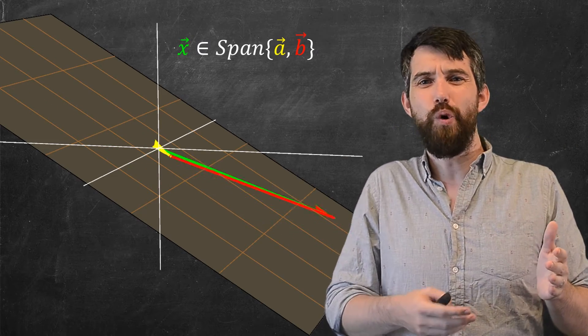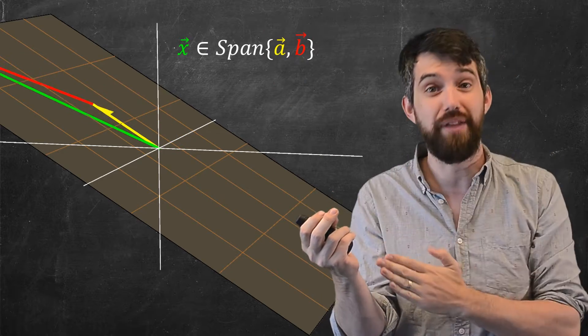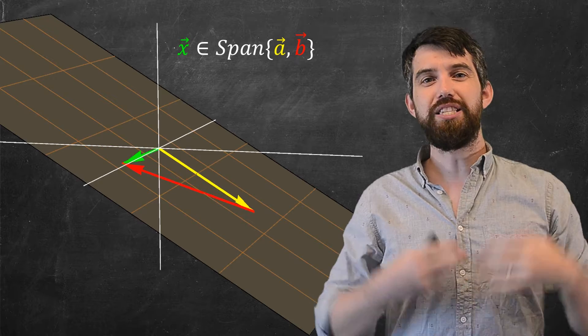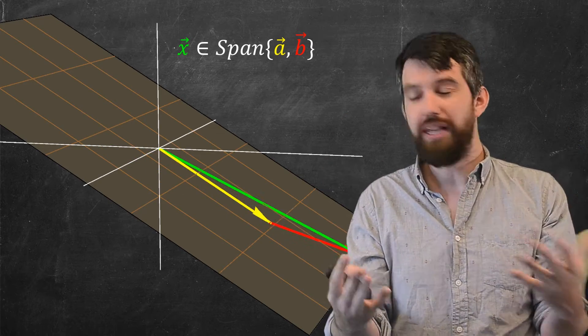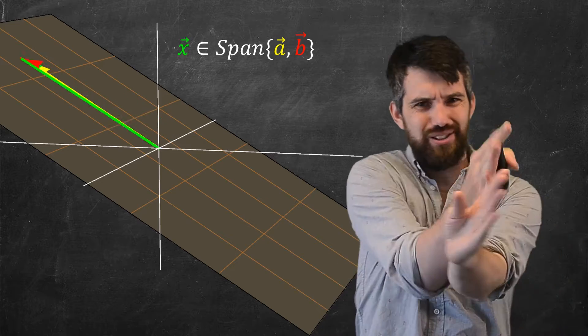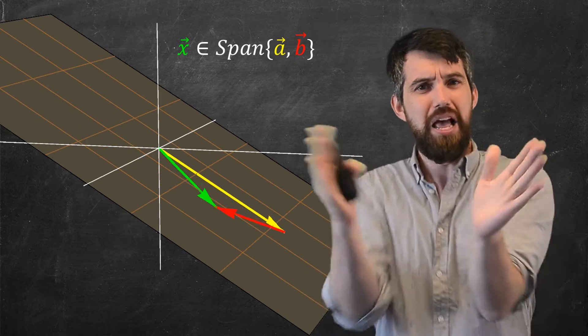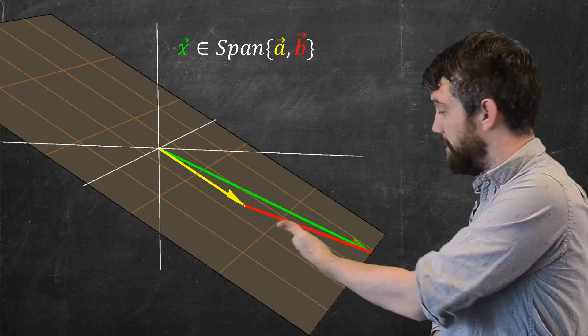Just in the same way the span of one vector becomes a line, with all the multiples of one vector, is it just a line? The span of two different vectors is going to look like a plane, at least almost always. If the two vectors lined up on the same line, or if one of the vectors was zero, that wouldn't be the case. But as long as there's a little angle between them, they generate some plane.